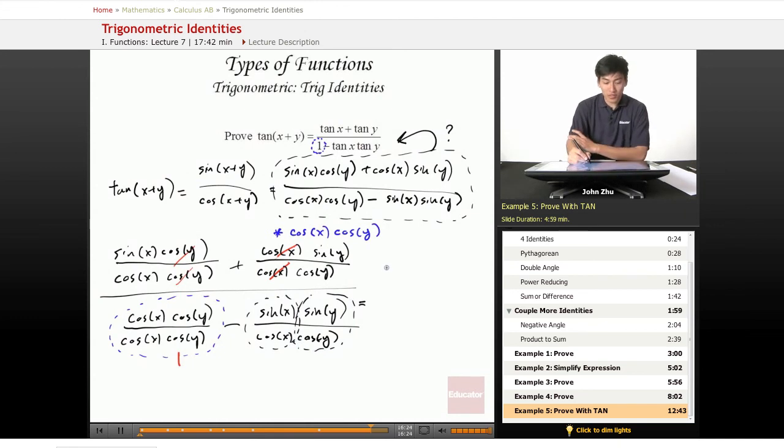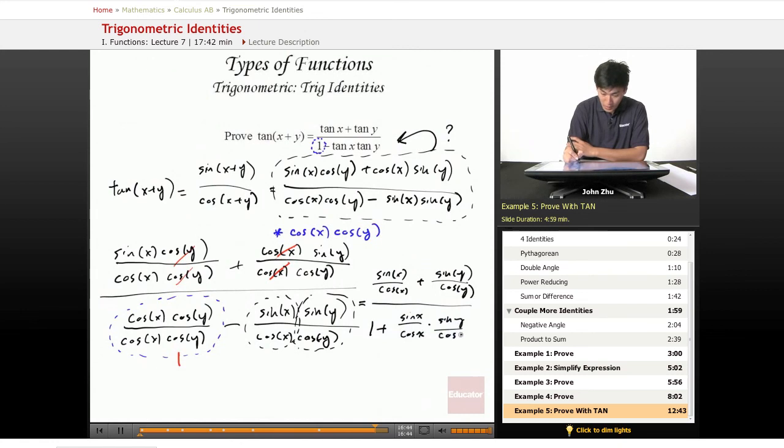So simplified version, we get sine of x over cosine of x plus sine of y over cosine of y over 1 plus sine of x over cosine of x times sine of y over cosine of y.